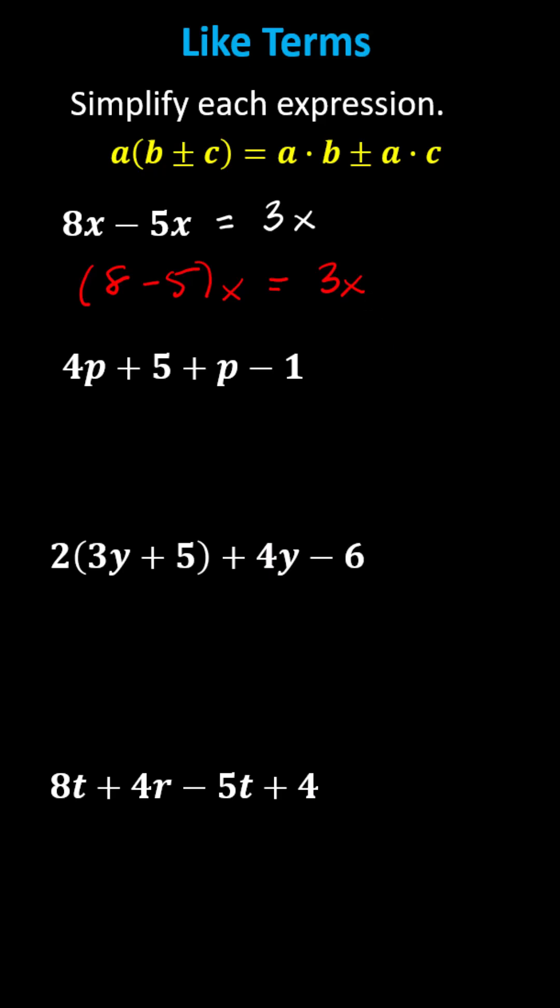For the next expression, we have 4p plus 5 plus p minus 1. If it's helpful, we can include the coefficient of 1 on the p. Notice 4p and 1p are like terms, and so are the constants of 5 and negative 1.